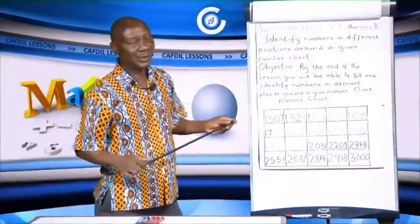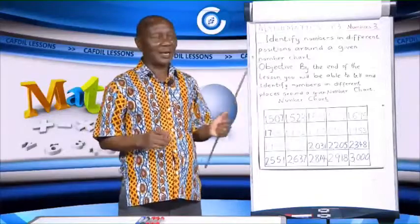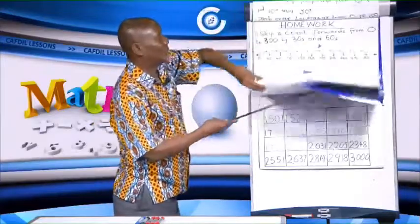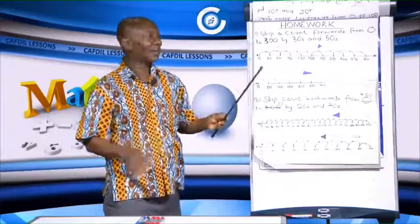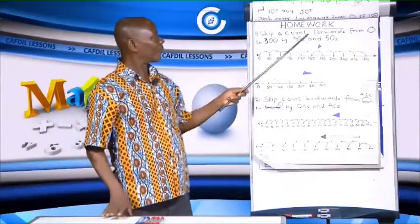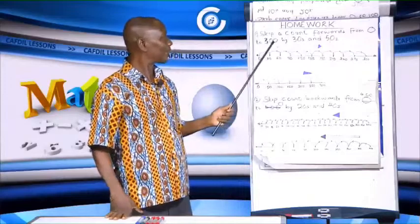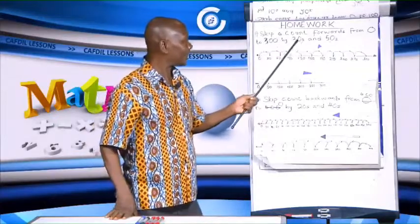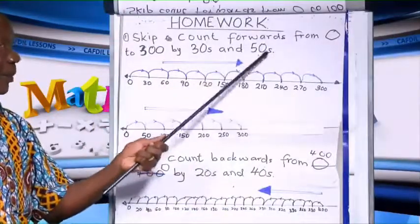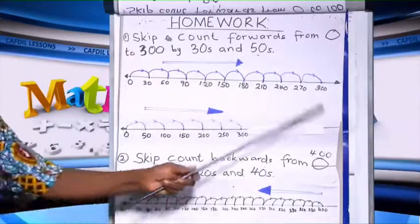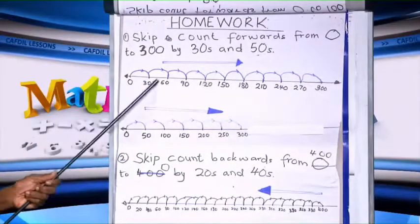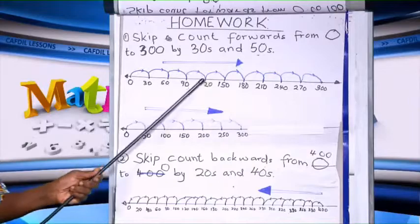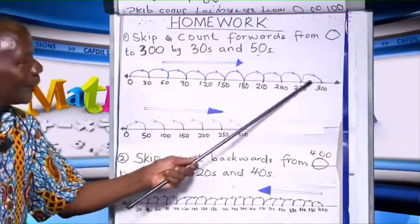Before we continue, let us go back and look at our assignment. Skip count forwards from 0 to 300 by 30s and 50s. We do 300 by 30s first, then 300 by 50s second. So we draw the number line: 0, 30, 60 — intervals of 30.